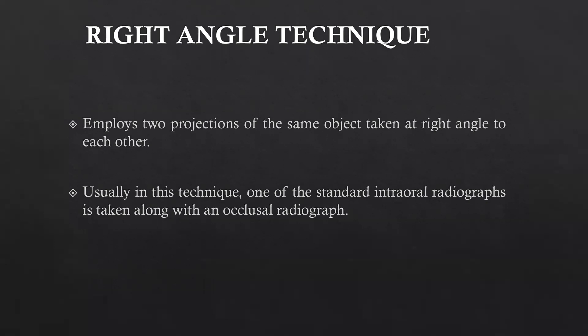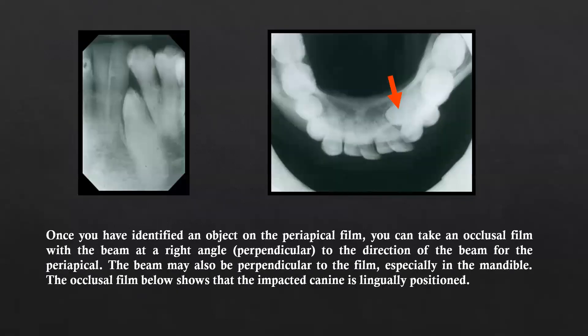First, the right angle technique. It employs two projections of the same object taken at right angles to one another. In this technique we initially take a standard intraoral IOPA radiograph to identify the object, and then we take another radiograph at 90 degrees to this standard intraoral radiograph, which is an occlusal radiograph in certain cases.